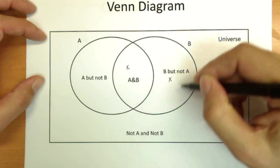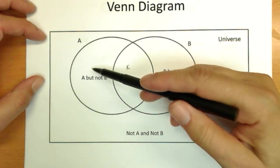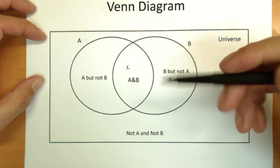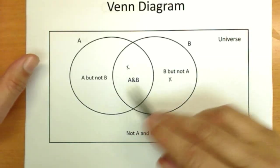Over here, any items that would be outside of this circle, but inside this one, would have properties of B, but not A. And over here, likewise we have A and not B. And then anything that's outside of both circles is still in our universe, and it doesn't have either one of those two properties.